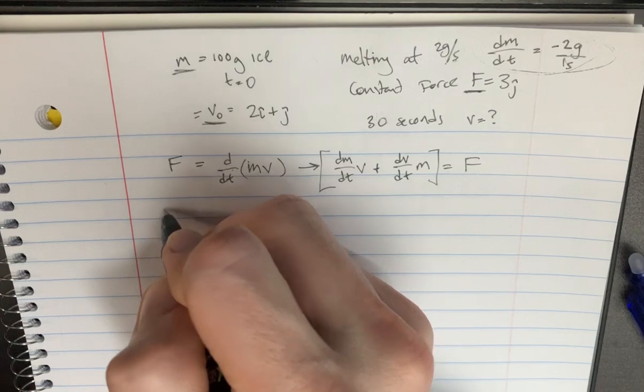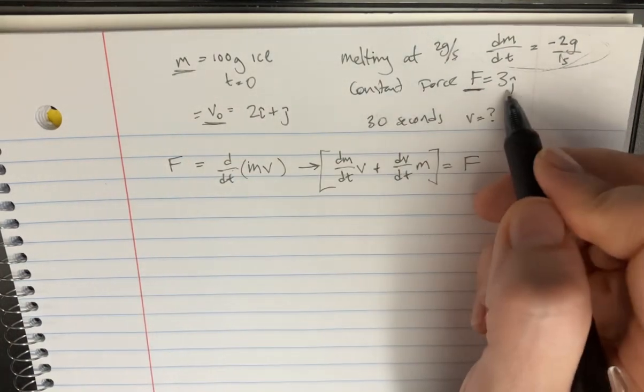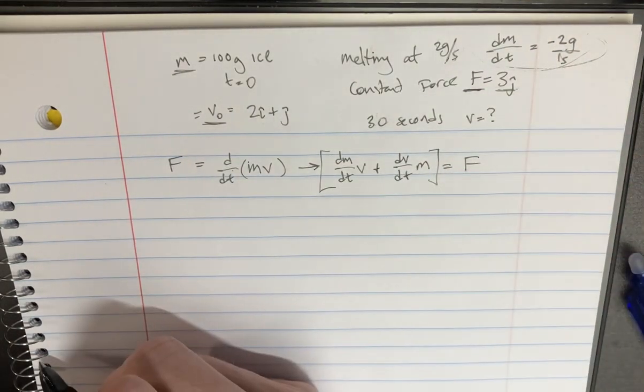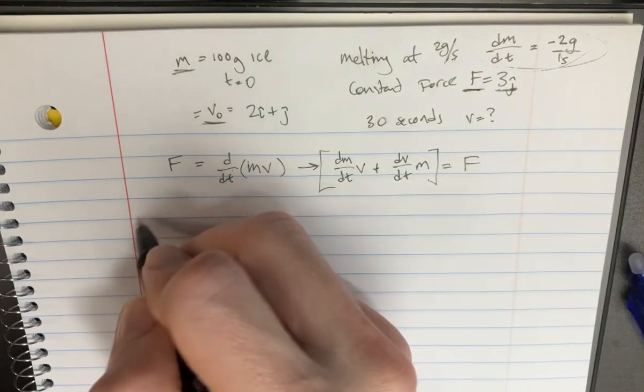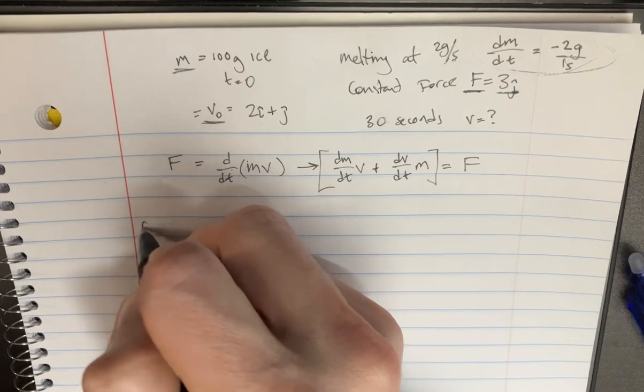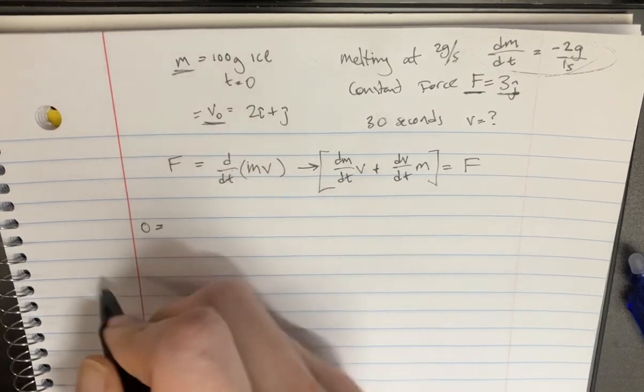Now, we know that the f here is equal to 3j, but there's no i component to this. So let's focus on the i component first. We'll say it's 0 because it doesn't really have the i component.